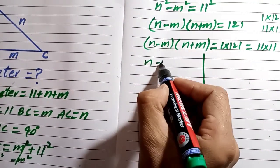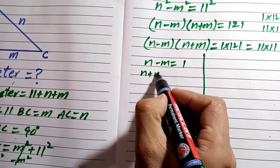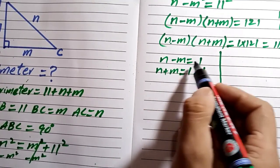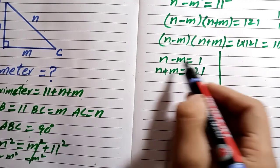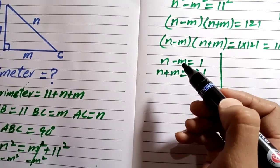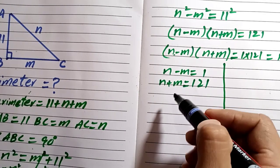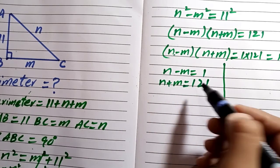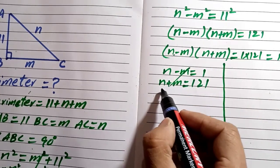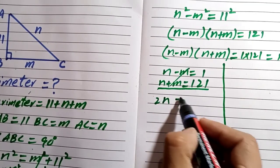So we have n minus m equals 1 and n plus m equals 121. To find the values of n and m, we can use the elimination or substitution method, or alternatively Cramer's rule or matrix inversion. Adding these two equations, the m terms cancel and we are left with 2n.